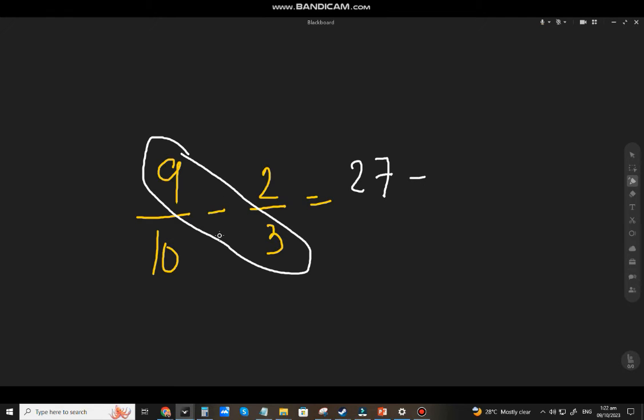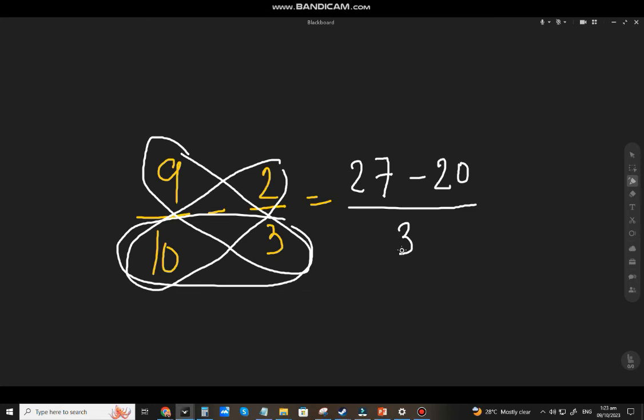And copy the minus sign here. 2 times 10, that will be 20 over 10 times 3, that will be 30. Equals 27 minus 20, that will be 7 over 30. And yes, that is already the lowest term.